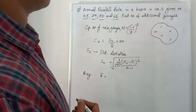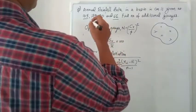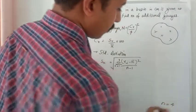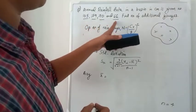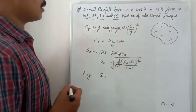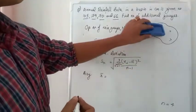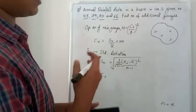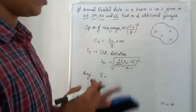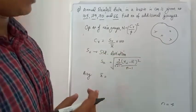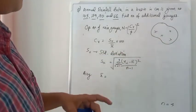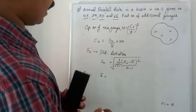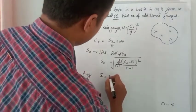Coming back to the question, we have four values: 105, 79, 70, and 66. So N is equal to four — there are four rain gauges. From this, you have to find out how much more or how much less rain gauges we need in that basin. Right now there are only four rain gauges.